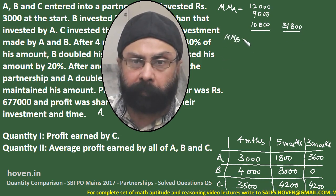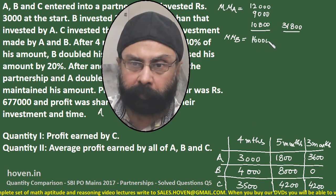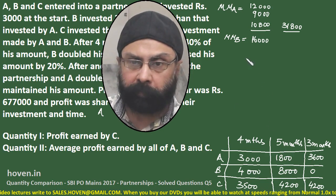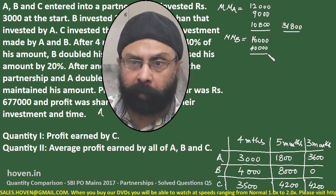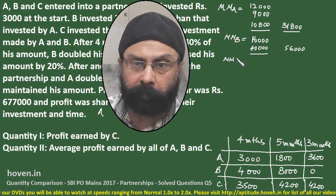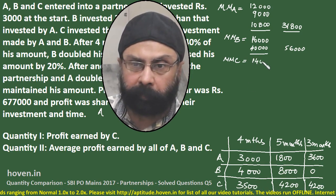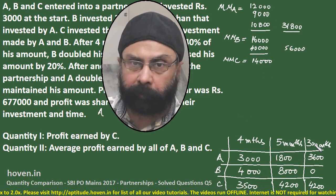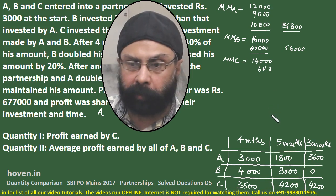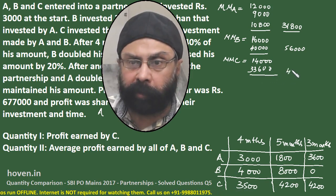Money months of B: 4 months × Rs. 4000 = 16000, plus 5 months × Rs. 8000 = 40000. This total is 56000. Money months of C: 3500 × 4 months = 14000, and 4200 stays for 8 months, so 4200 × 8 = 33600. This comes to a total of 47600.